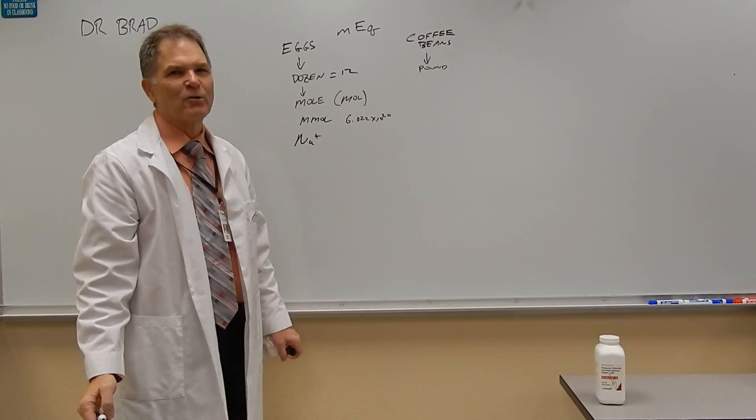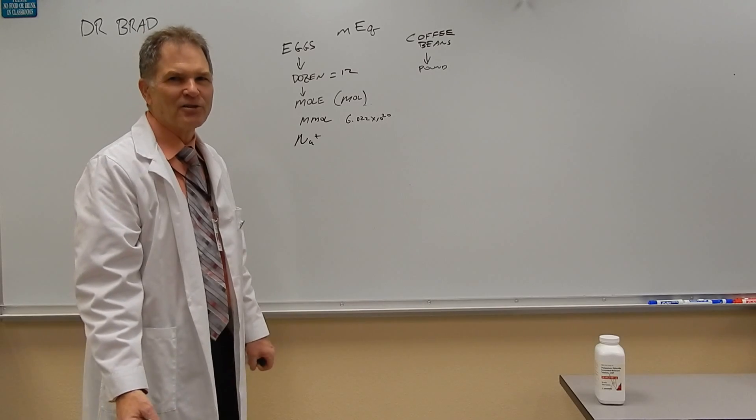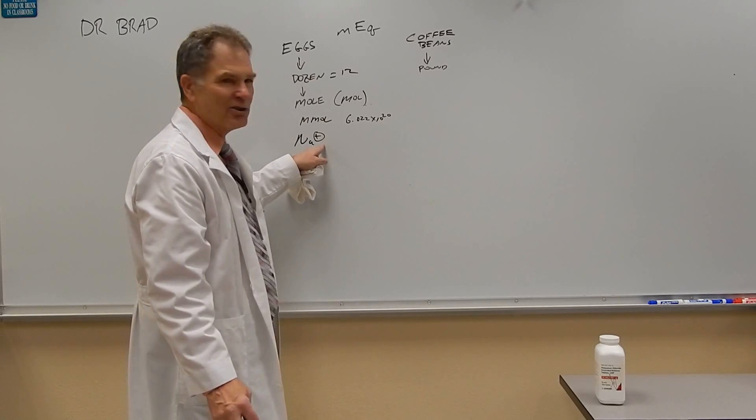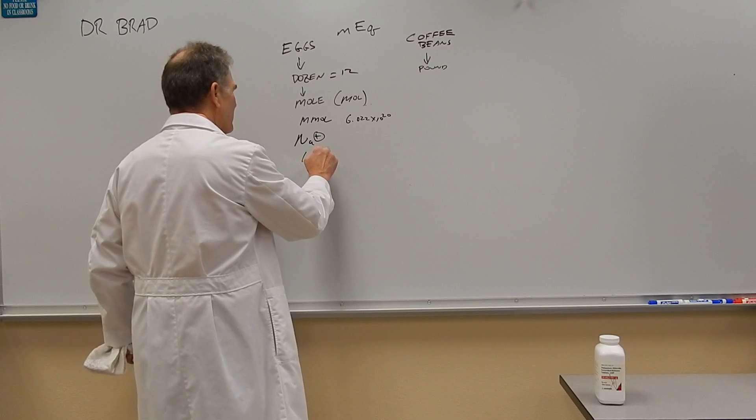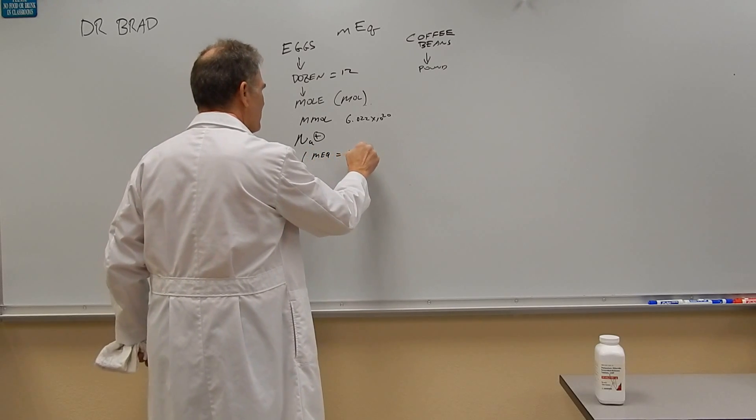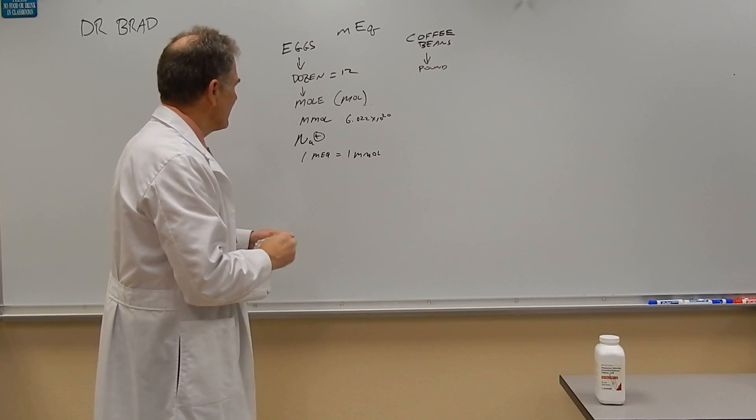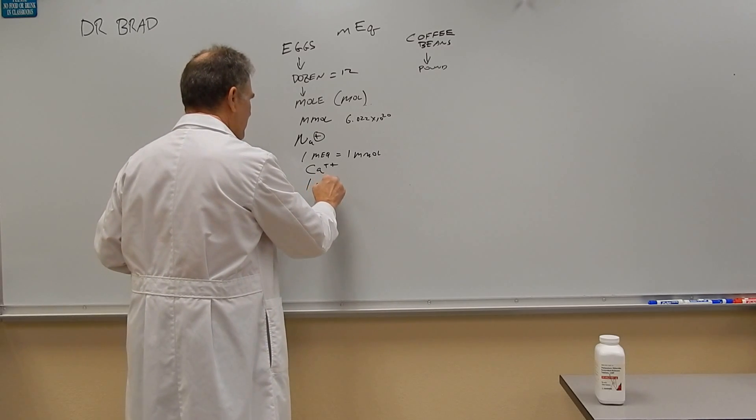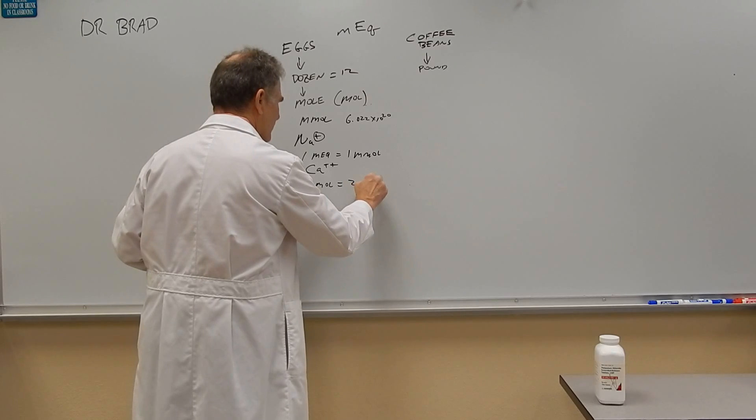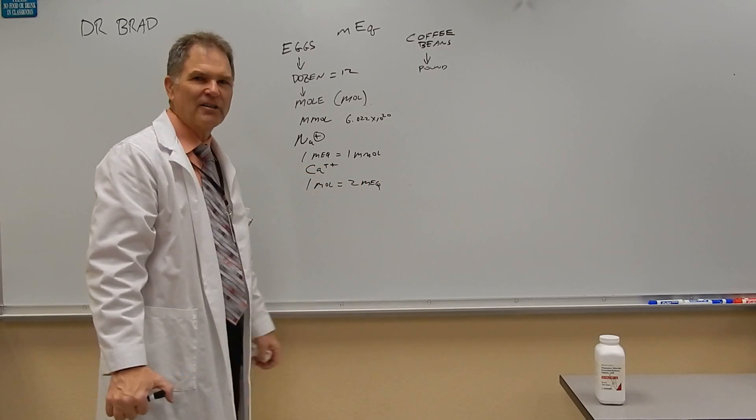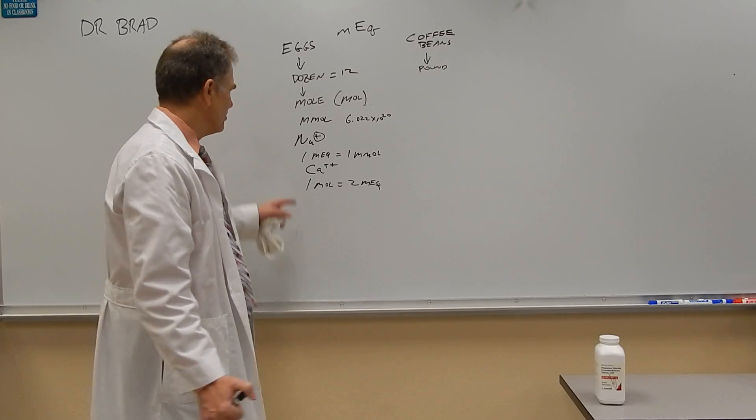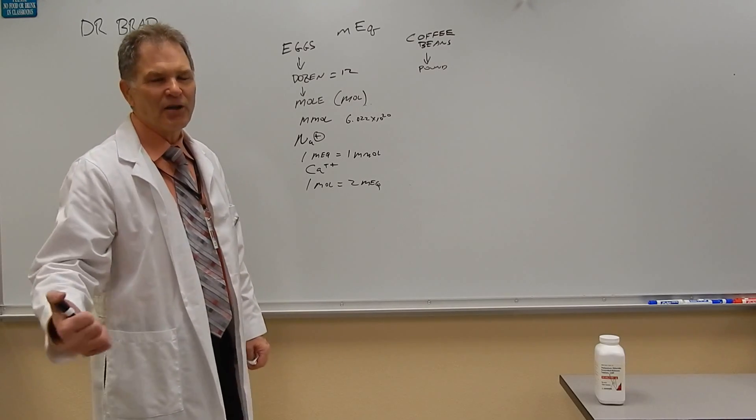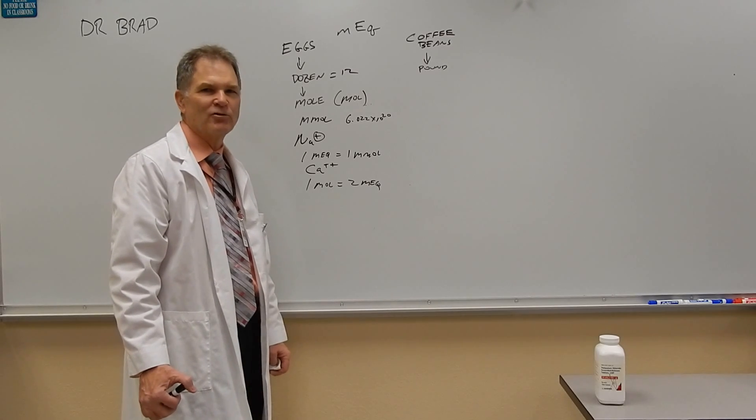So for a millimole, how do we get to milliequivalent? A milliequivalent is just a millimole of charges. We'd like to see how many charges are on each ion. In this case, there's one charge per ion, so one milliequivalent equals one millimole. If you have calcium, that's two charges. One millimole equals two milliequivalents. Because there's two charges on each ion, you get double the number of milliequivalents as you would with a millimole of sodium. So that's all it is. You can think of a milliequivalent as a millimole of charges.